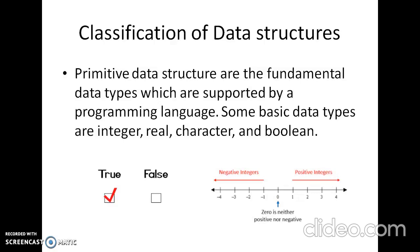Primitive data structures are the fundamental data types which are supported by our programming languages. Some basic data types are integer, real, character, and boolean, as we have already studied in programming languages like C, C++, Python, and so on. The terms data type, basic data type, and primitive data type are often used interchangeably.